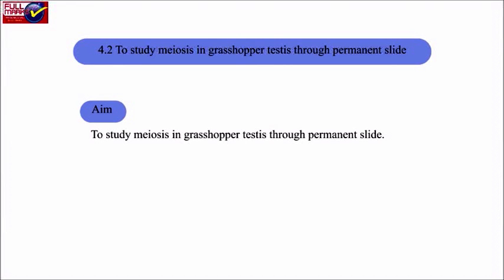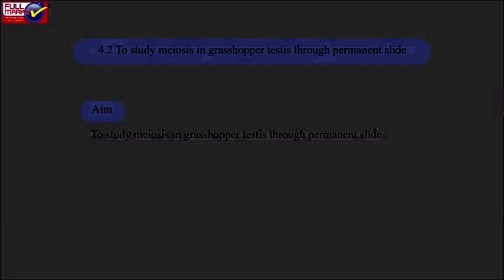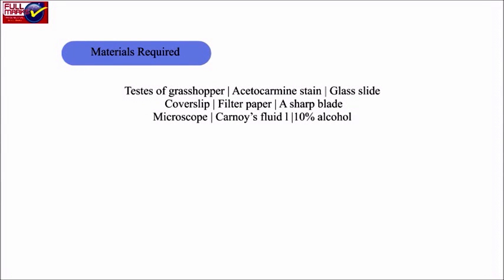Experiment 4.2: To study meiosis in grasshopper testis through permanent slide. Aim: To study meiosis in grasshopper testis through permanent slide. Materials required: testis of grasshopper, acetocarmine stain, glass slide, cover slip, filter paper, a sharp blade, microscope, Carnoy's fluid, and 10% alcohol.